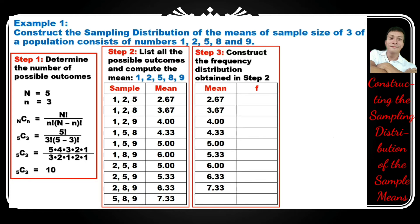Step 3: construct the frequency distribution obtained in step 2. On the first column, write the mean. On the second column, its corresponding frequency. The frequency of mean 2.67 is 1, 3.67 is 1, 4 is 1, 4.33 is 1, 5 is 2, 5.33 is 1, 6 is 1, 6.33 is 1, and 7.33 is also 1. The total is 10.